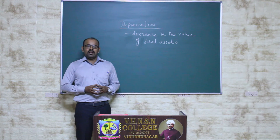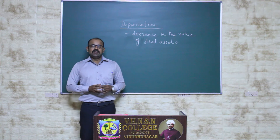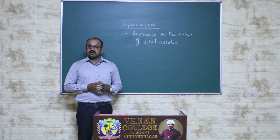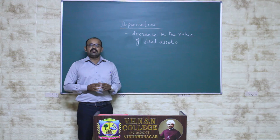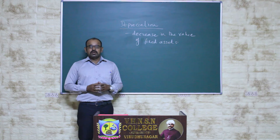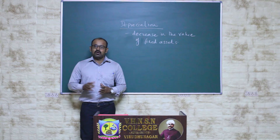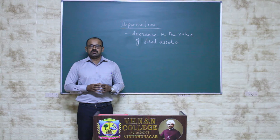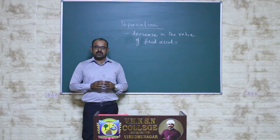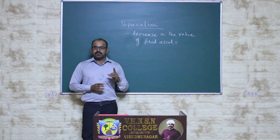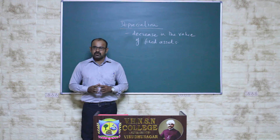Another objective is to know the true value of a particular fixed asset. True value means if you purchased an asset 10 years ago and now you are going to sell it, you can't sell it at the same price you purchased it for — there will be a difference. That difference relates to the book value and the market value. Book value means the asset's value after depreciation has been deducted — it is not the purchase value. Purchase value, book value, and market value are all different.